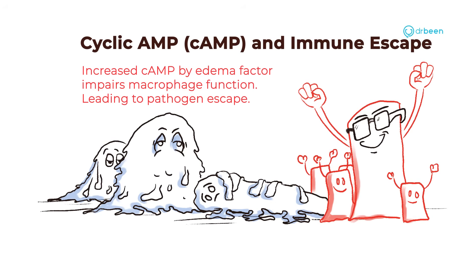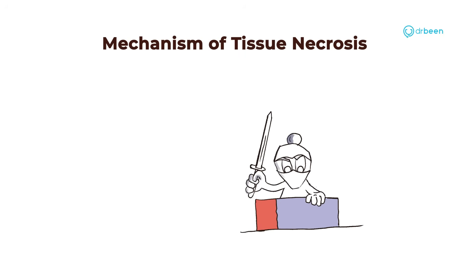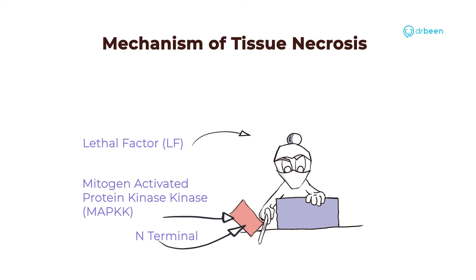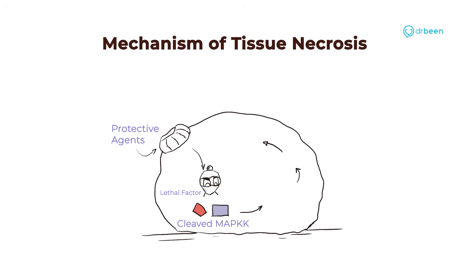Note that dendritic cells can continue to kill the pathogen while some macrophages fail. Now let's move on to the mechanism of tissue necrosis. The lethal factor is to blame, as it is a zinc-dependent endoprotease. It causes N-terminal clipping of the mitogen-activated protein kinase kinases (MAPKKs). This clipping inhibits kinases, causing activation of alternate pathways, which in turn initiates apoptosis resulting in macrophage destruction.